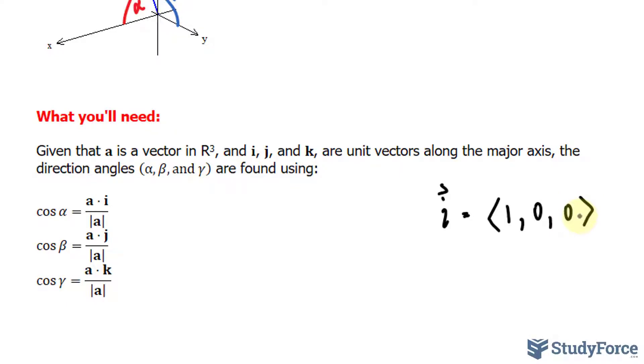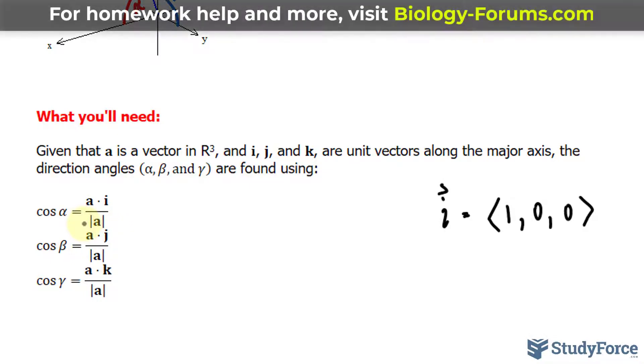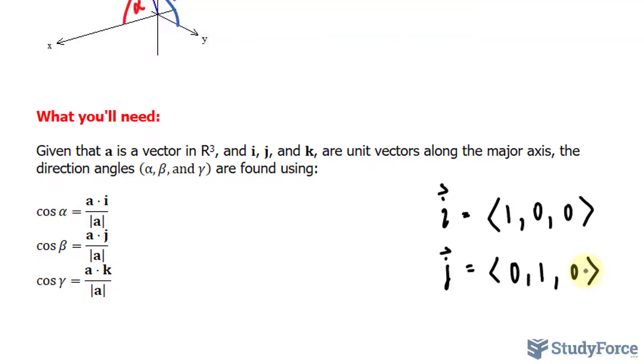So you take the dot product of a and i and divide it by the magnitude of a. Similarly, to find beta, you do the same thing but use j (which has components 0, 1, and 0), and you get the idea. But rather than just simplifying with three formulas, let's find out how these formulas are derived. We'll do this really quickly.